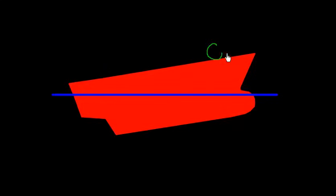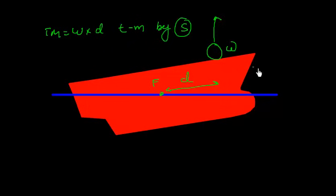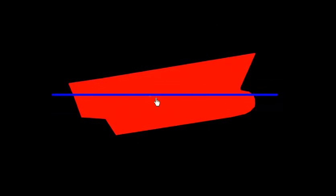In the case of discharge, suppose I discharge this weight W at distance D from the center of flotation. The trimming moment is W into D ton-meters by stern, because if I discharge something from forward, my aft draft will increase.